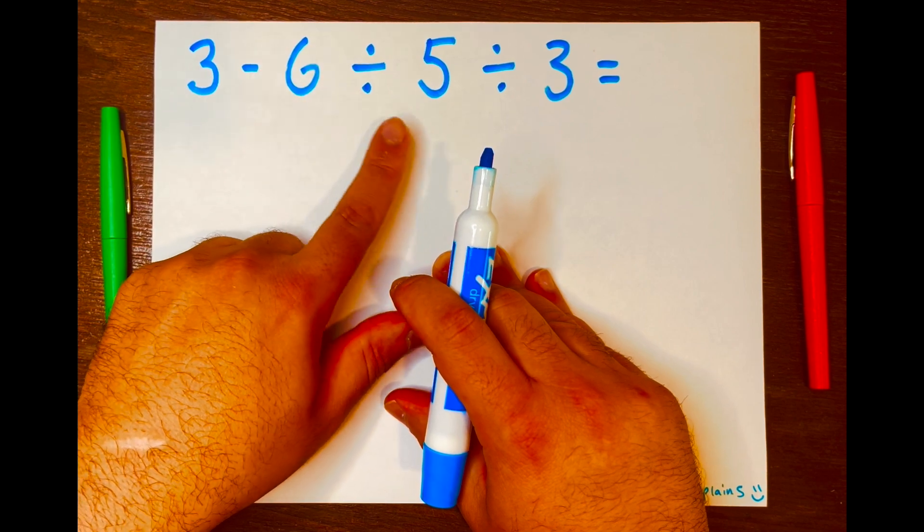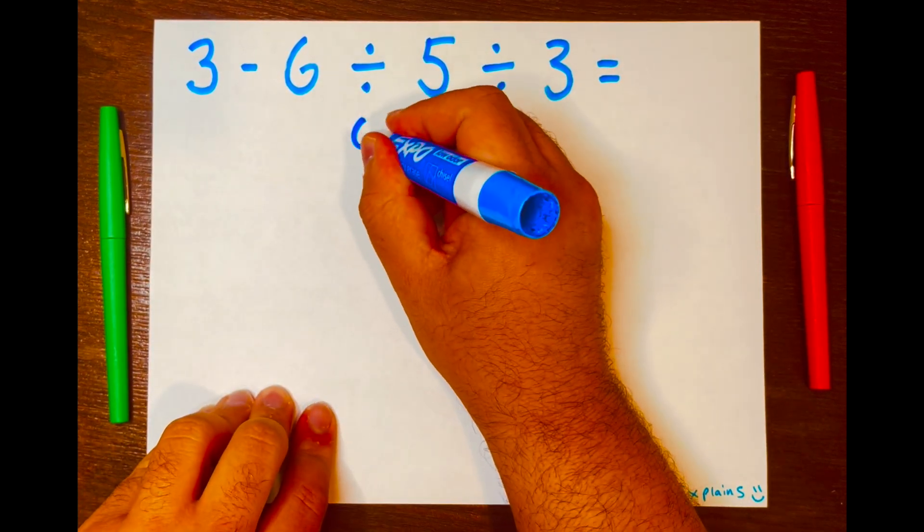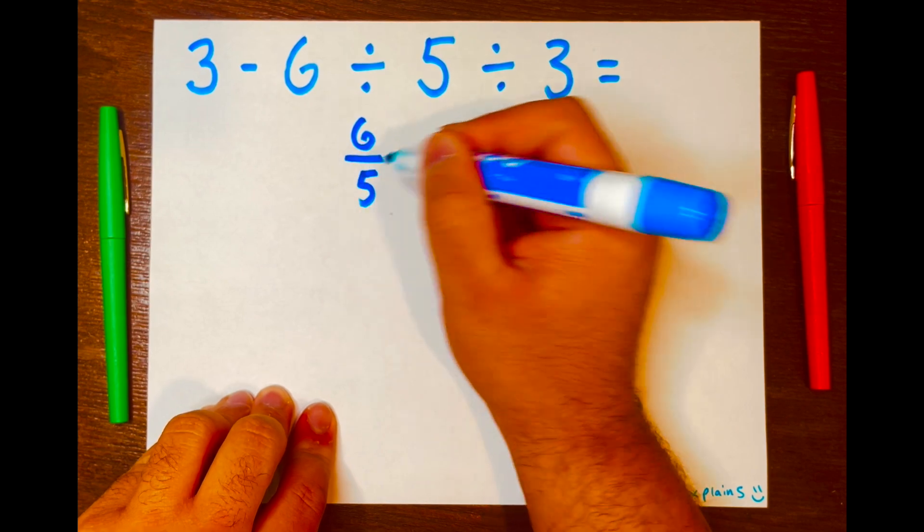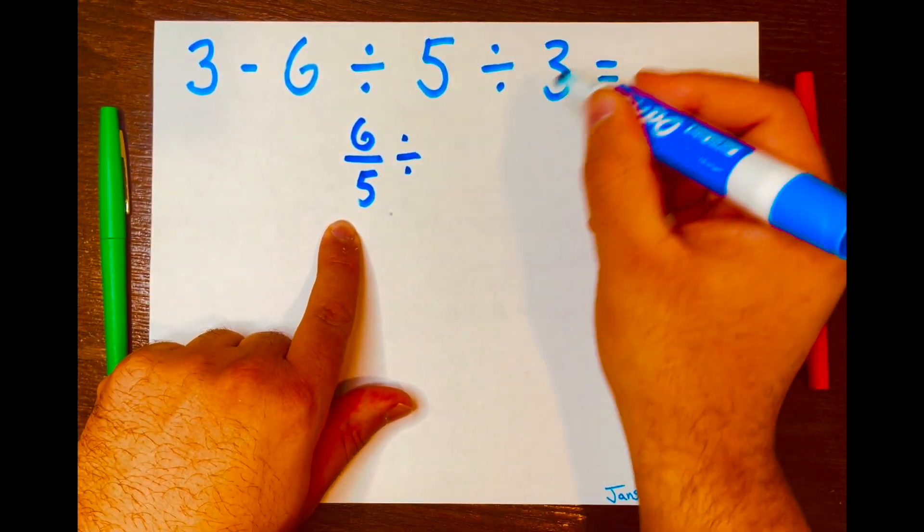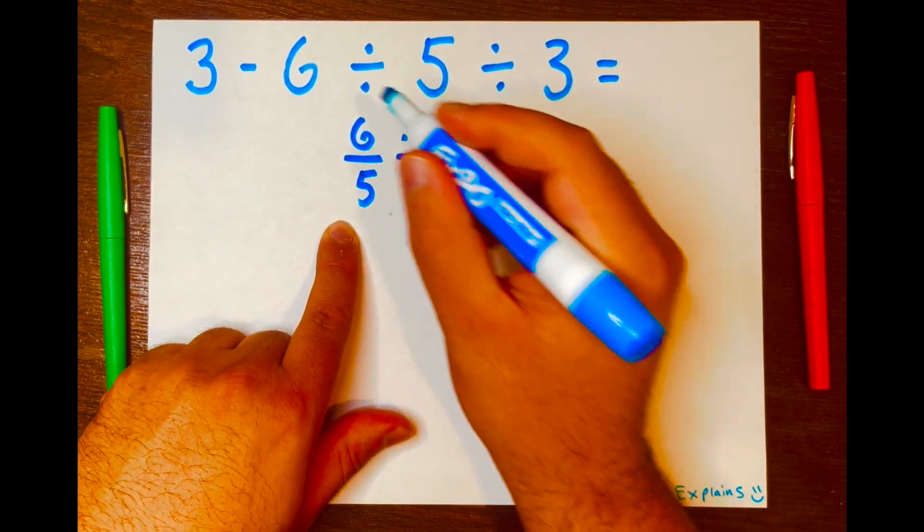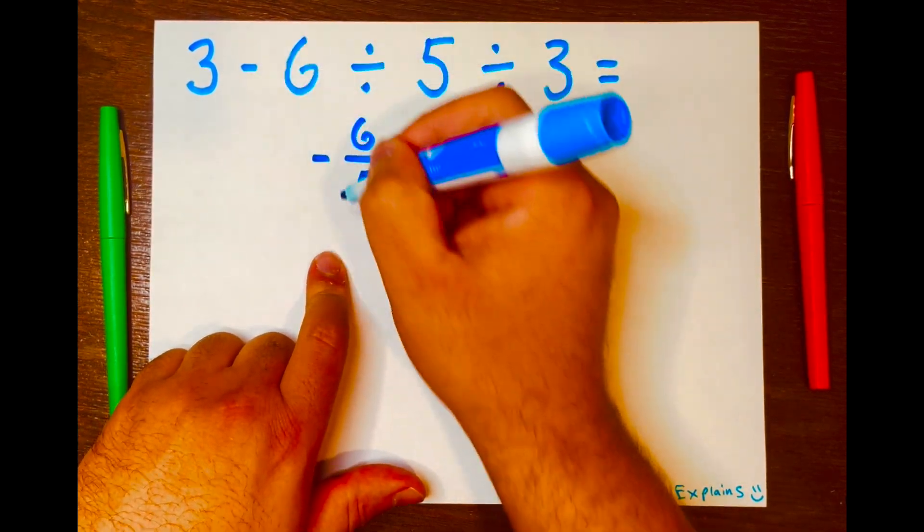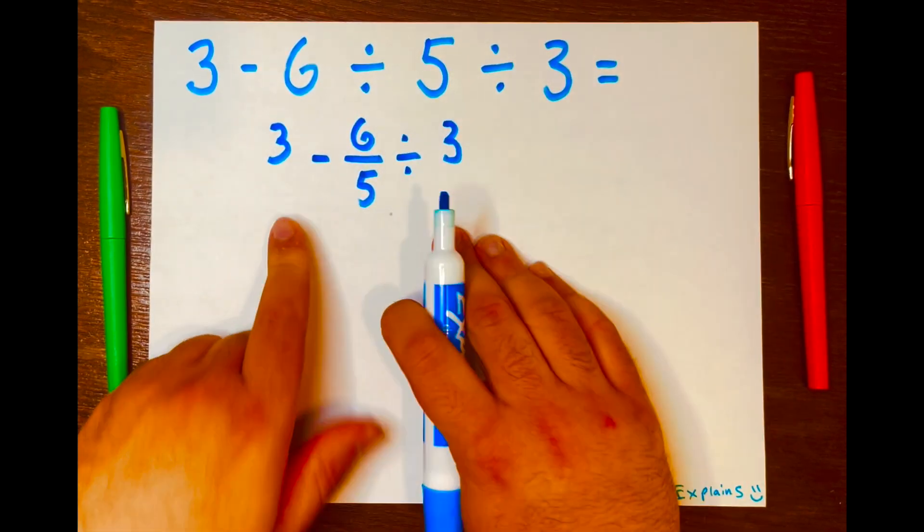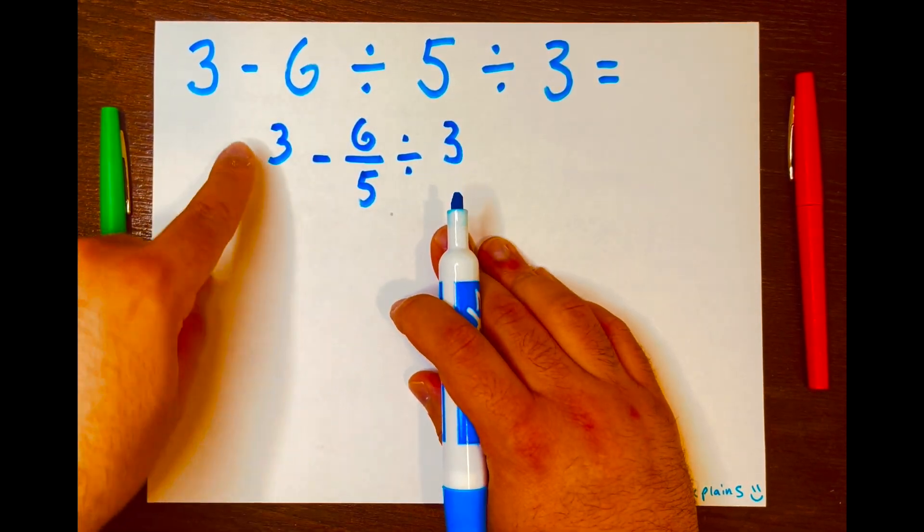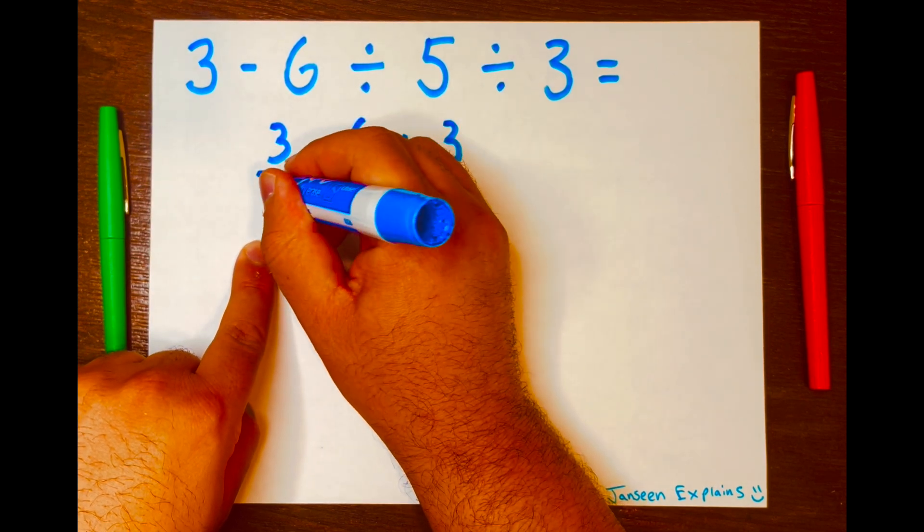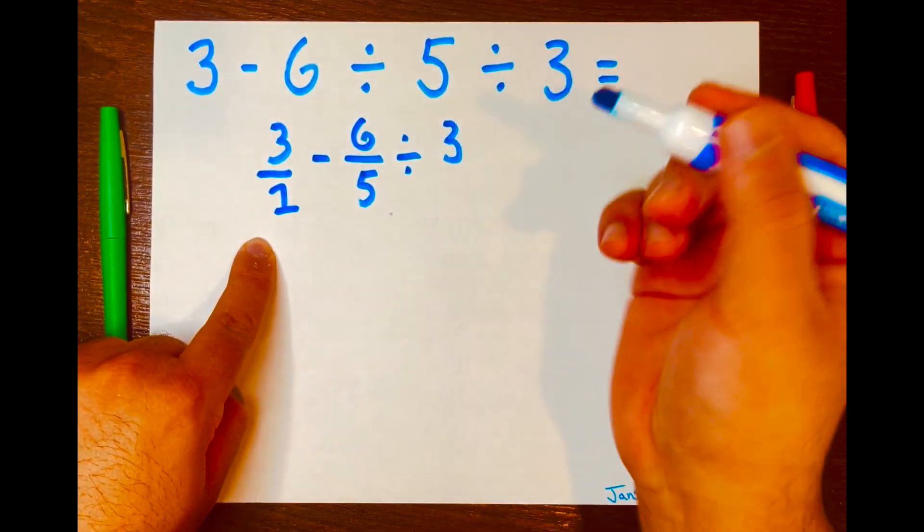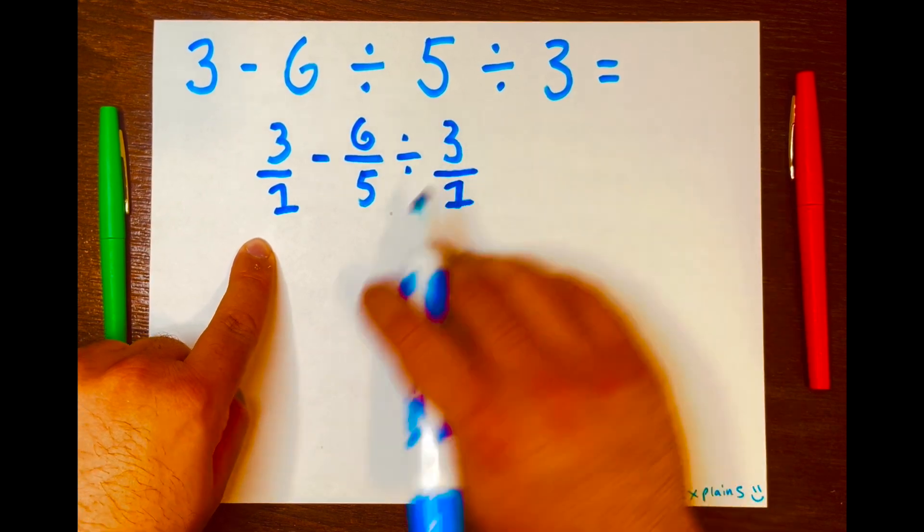So 6 divided by 5 will go first, and I'll turn this into a fraction to make the math easy. Then bring down the division symbol and the 3, and then the minus symbol and the 3. I want to turn the 3 into a fraction to make the math easy, knowing that 3 over 1 equals 3 does not change the 3. And the same goes here, 3 over 1.